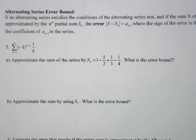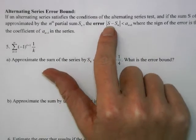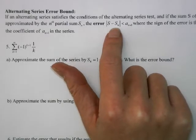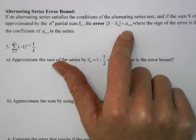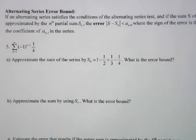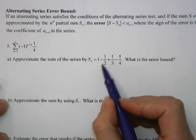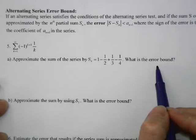Next, we're going to talk about the alternating series error bound. If an alternating series satisfies the conditions of the alternating series test and the sum is approximated by the nth partial sum Sn, the error between the actual sum and the partial sum is going to be less than A_(n+1). So if you have the sum of the first four terms, the error is less than the fifth term, and the sign of the error is the same as the coefficient of A_(n+1) in the series.